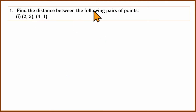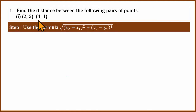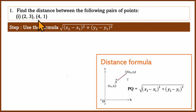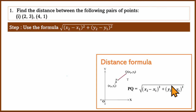Find the distance between the following pair of points. We will use the distance formula. The distance formula is: PQ equals the square root of (x2 minus x1) whole square plus (y2 minus y1) whole square. This is the distance formula, and it is used to solve the problem.